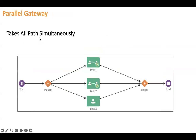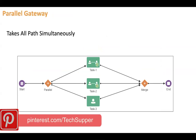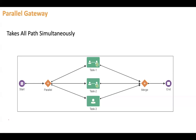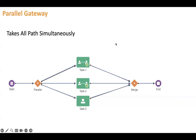The parallel gateway takes all paths simultaneously. For example, when booking a trip you book a hotel, flights, and a cab all at the same time — no need to wait for one before the other. The token waits until all activities are completed, then they merge and the process proceeds further.